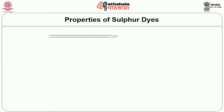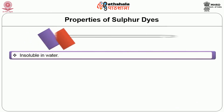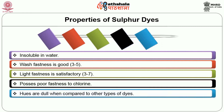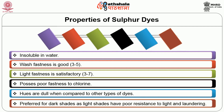Properties of sulphur dyes: sulphur dyes are insoluble in water. They possess good wash fastness — 3 to 5 — and satisfactory light fastness — 3 to 7. They possess poor fastness to chlorine. Hues are dull compared to other dyes. They are preferred for dark shades as light shades have poor resistance to light and laundering. They are soluble in a solution of sodium sulphide, to which sodium carbonate may or may not be added. Sodium sulphide acts as a reducing agent, severing the sulphur linkage and breaking down the molecules into simpler components which are soluble in water.